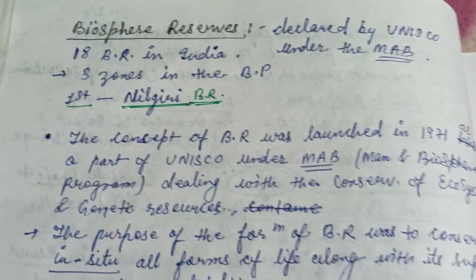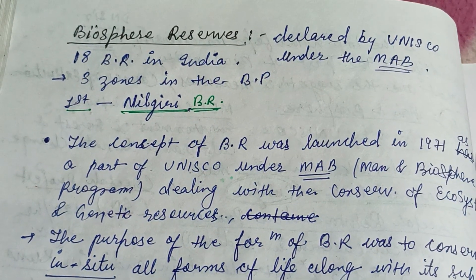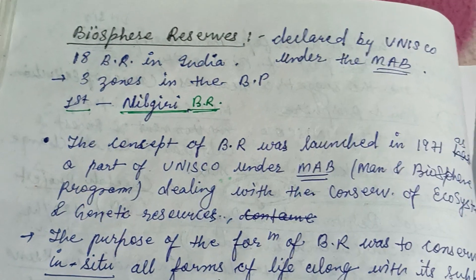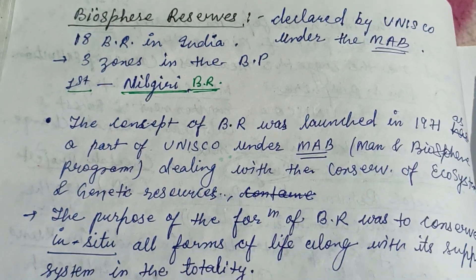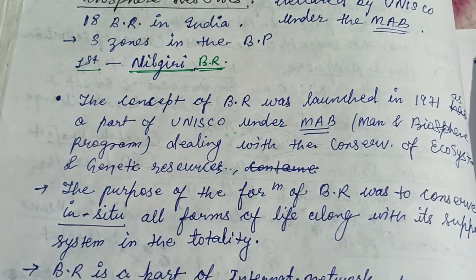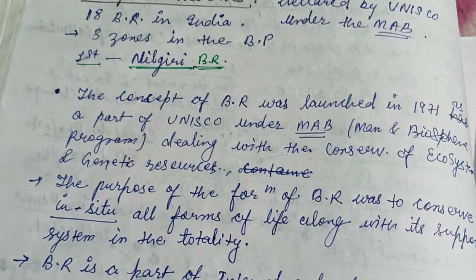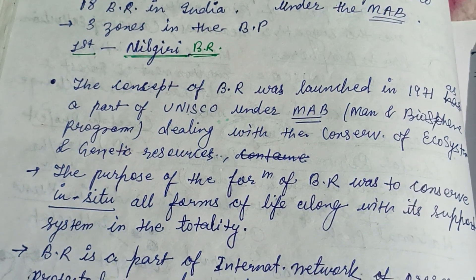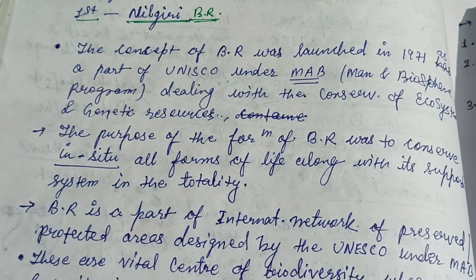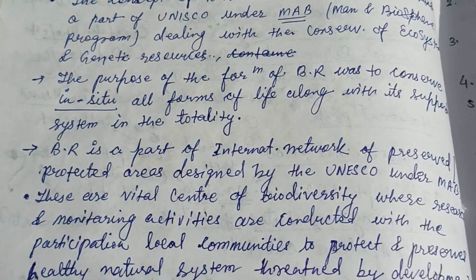Today's topic is Biosphere Reserve, which is a subtopic of the Global Environmental Issues Unit 4 of the Core Course 5. Biosphere Reserve was launched in 1971 as a part of UNESCO under MAP — the Man and Biosphere Reserve Program — dealing with the conservation of the ecosystem and genetic resources.